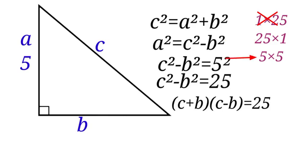For the third one, which is 5 × 5, it means c + b = 5 and c - b = 5, but that is not true. They are not the same. C + b is greater than c - b, so we can't use that.